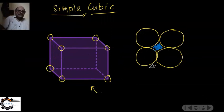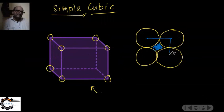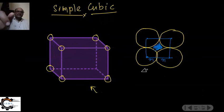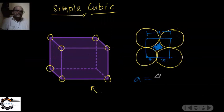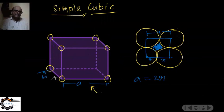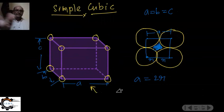There is a void space between atoms in the simple cubic structure. If I take one unit cell, the atom radius is r. So the lattice parameter a equals 2r. In simple cubic, a = b = c — all sides are equal.